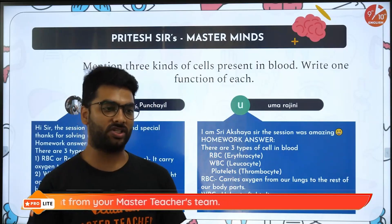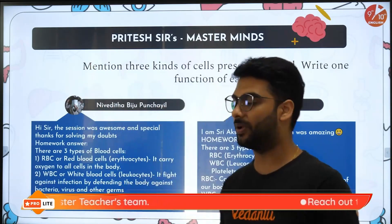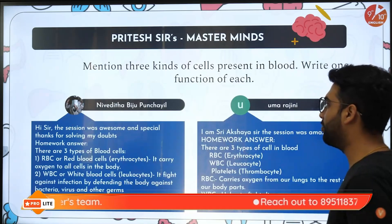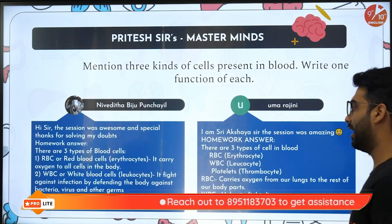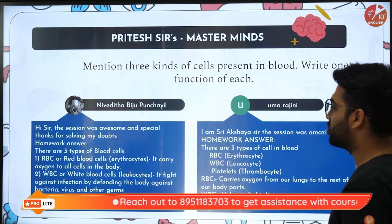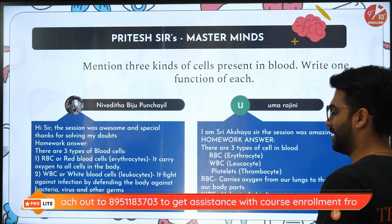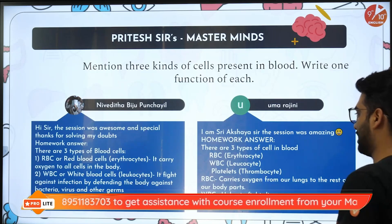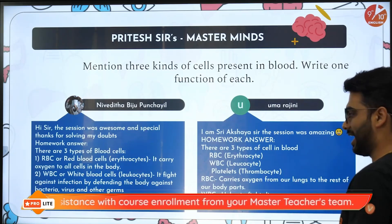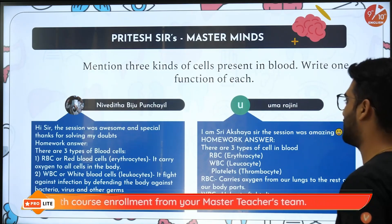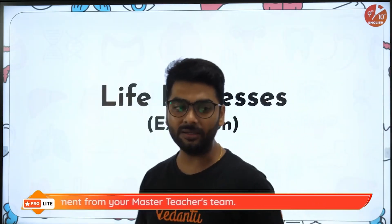Last time there was a question about the three kinds of cells present in our blood. We got Nivedita, Vijupunchail and Uma Rajini who gave the correct answer. Shri Akshaya also gave the answer: the different kinds of cells present in the blood are RBC, WBC and platelets.